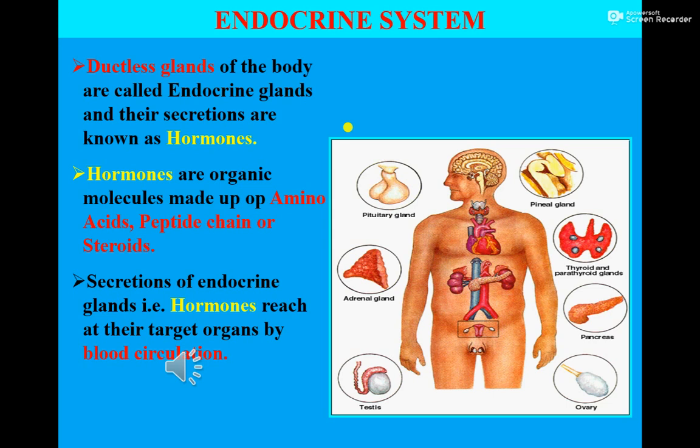On the other hand, ductless glands do not possess any kind of duct as found in exocrine glands. Ductless glands pour their secretion directly into the bloodstream and their secretions reach their target organs via blood circulation. Secretions of these ductless glands — i.e., endocrine glands — are known as hormones. So we should know what hormones are.